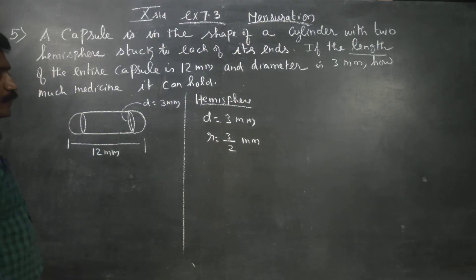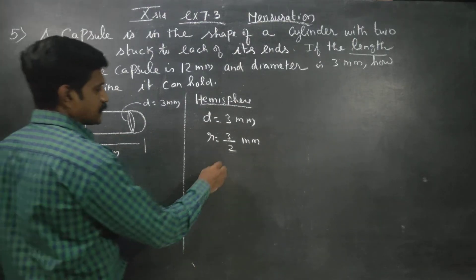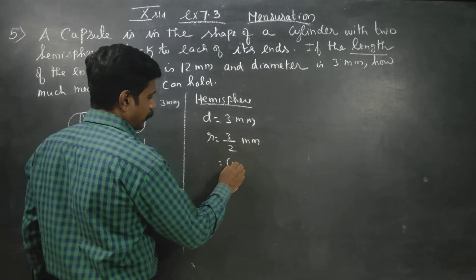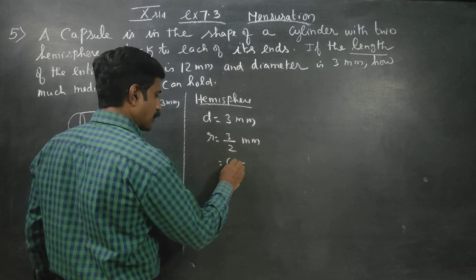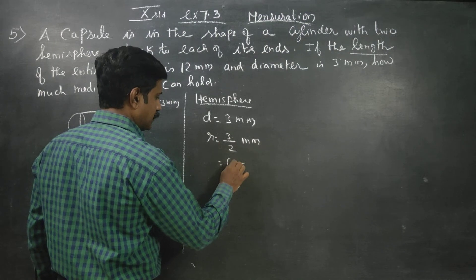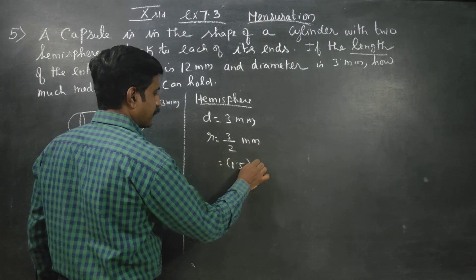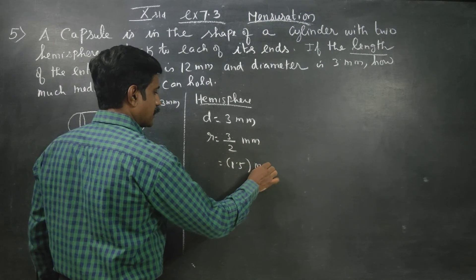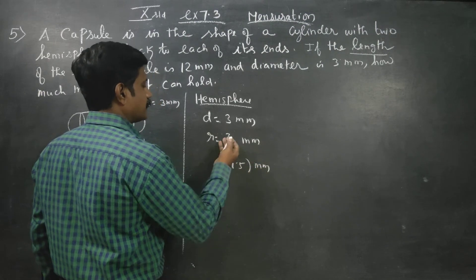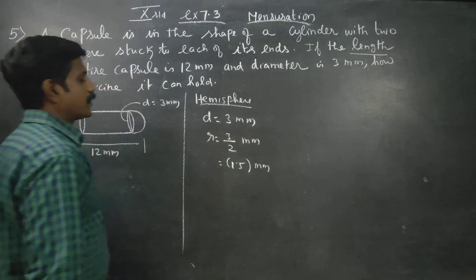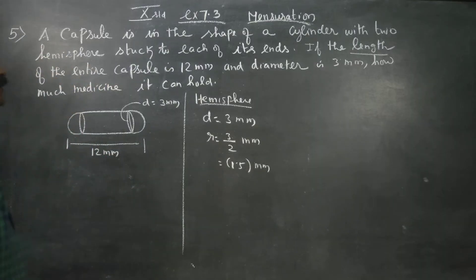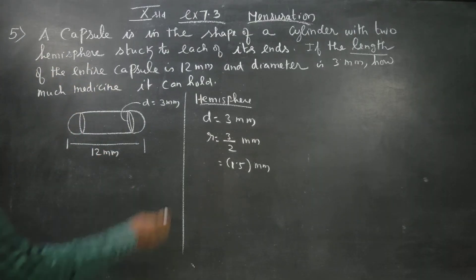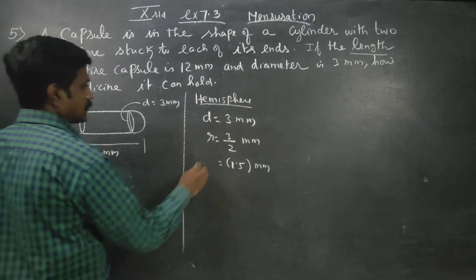The radius is 3 by 2, which gives 1.5 mm. You can use the fraction 3/2. The radius is written on the sheet.